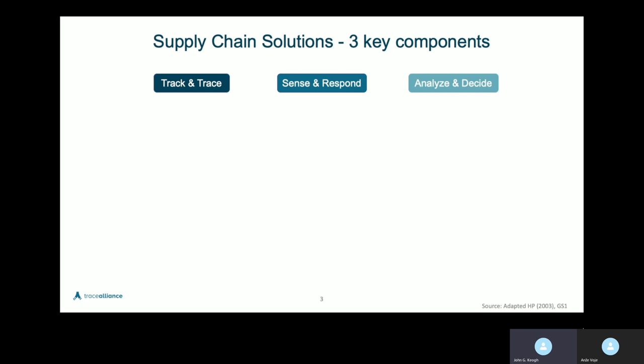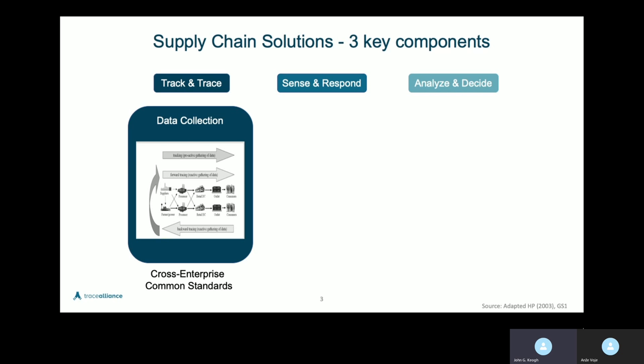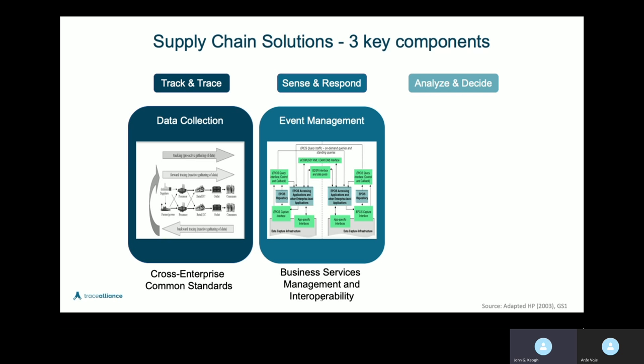Let's break this down a little bit. We know in the supply chain we have a concept of track and trace. Track and trace is really at the operational level — it's about data collection. And in order to enable that, you need common enterprise standards or supply chain standards. We have that today with GS1 standards. The OriginTrail protocol is built on GS1 standards. At the operational level, when you collect that data, at the business management level you have what's called event management.